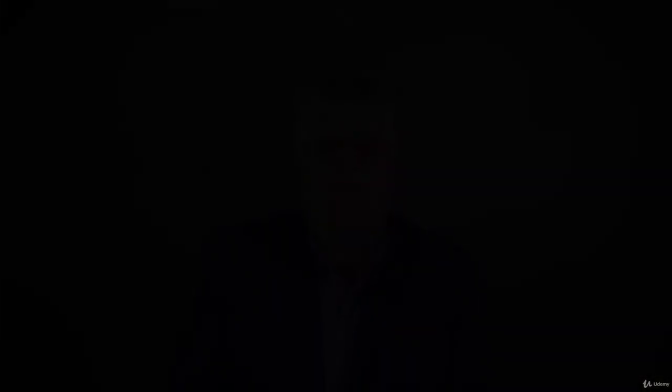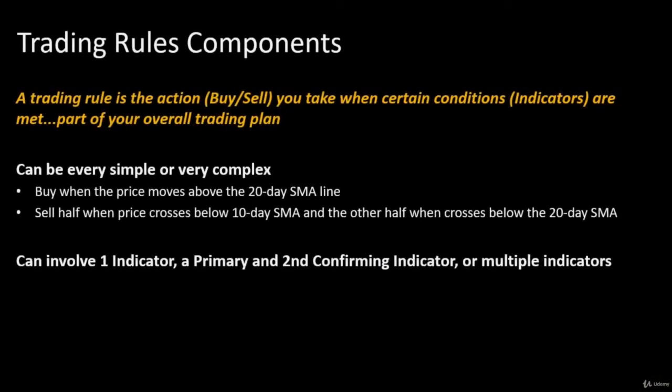What do we mean by trading rules? A trading rule is the action you're going to take — a buy or sell, for example — when certain conditions, and that's your indicators, are met. It's part of your overall trading plan.